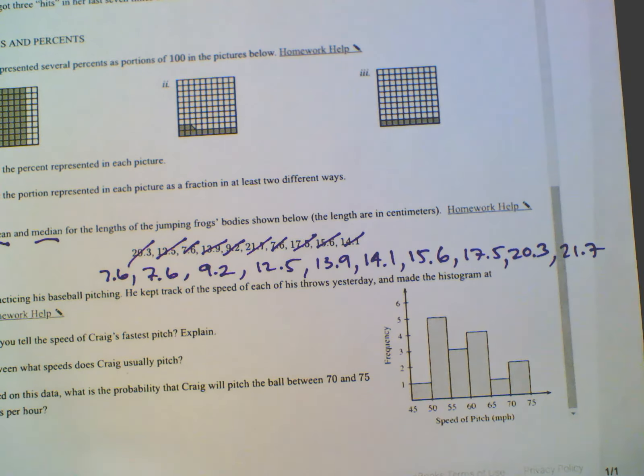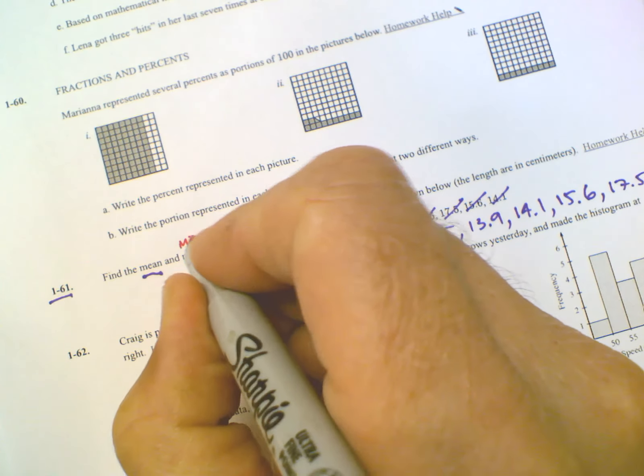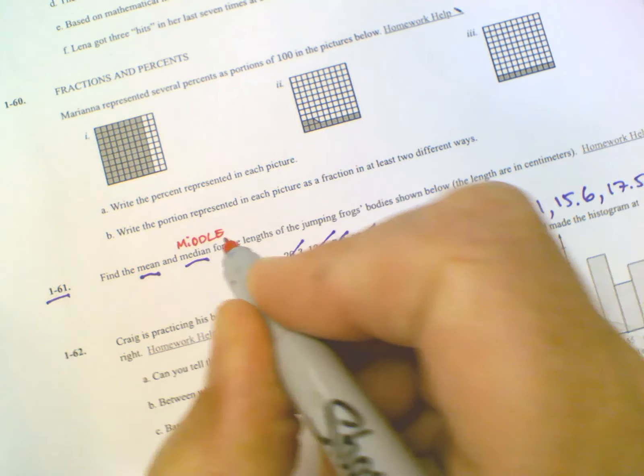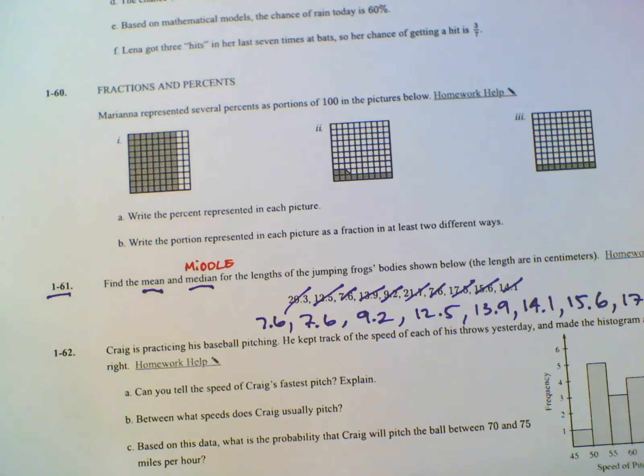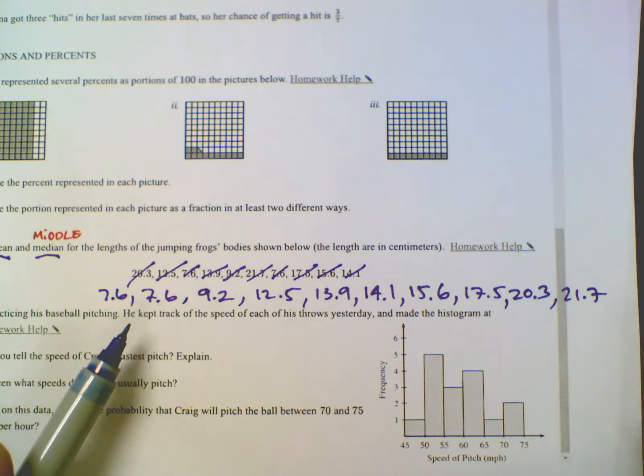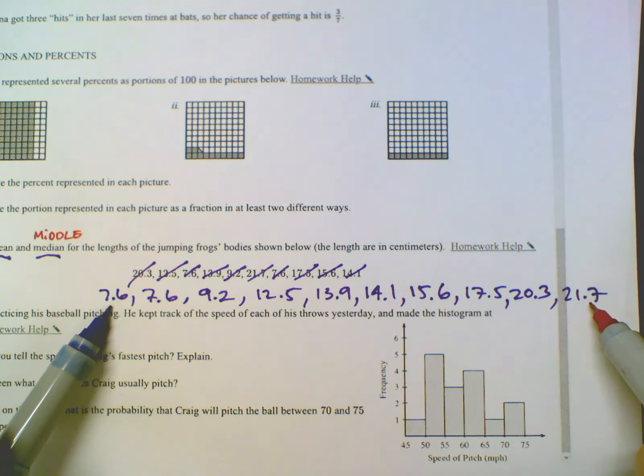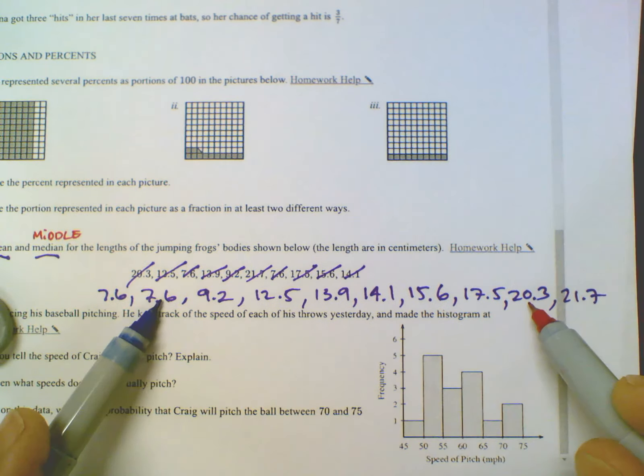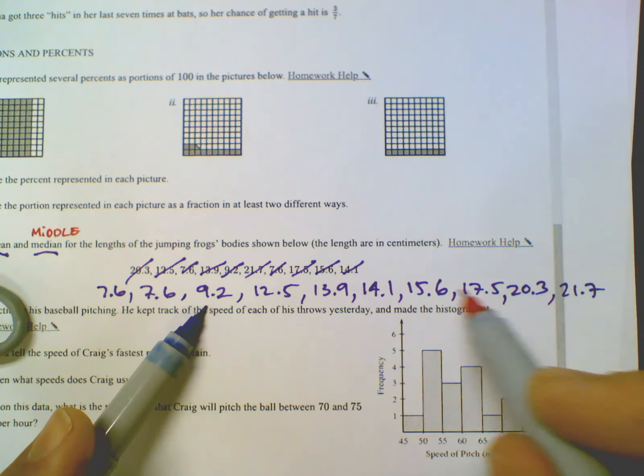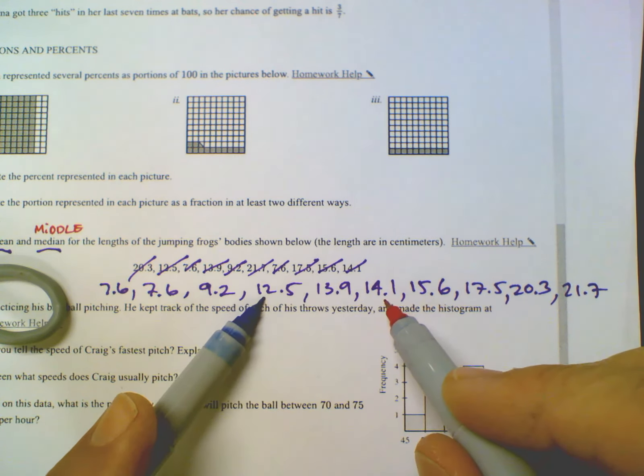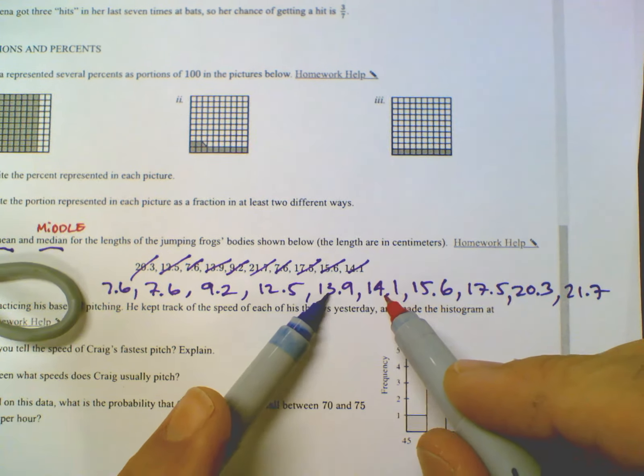So those are my numbers. And if I was doing the median of those, remember median is to find the middle. Median. That word median is very similar to the word middle. Okay. And so middle, median. So I got my list and I tend to start from the outside. And I just work my way in one at a time.